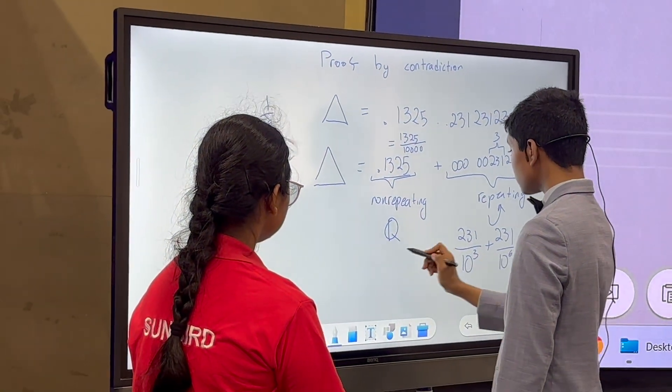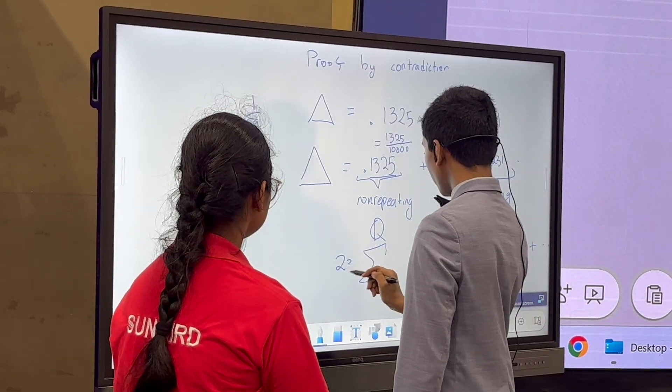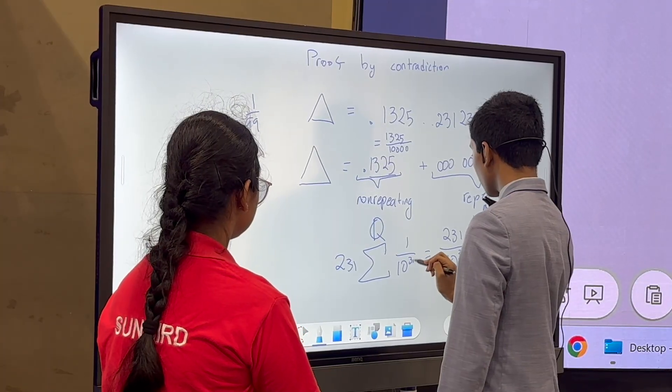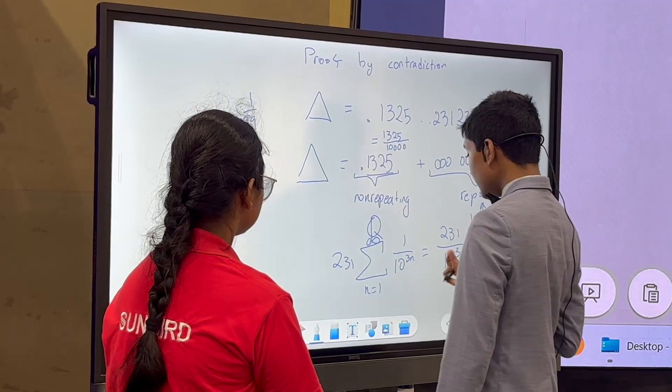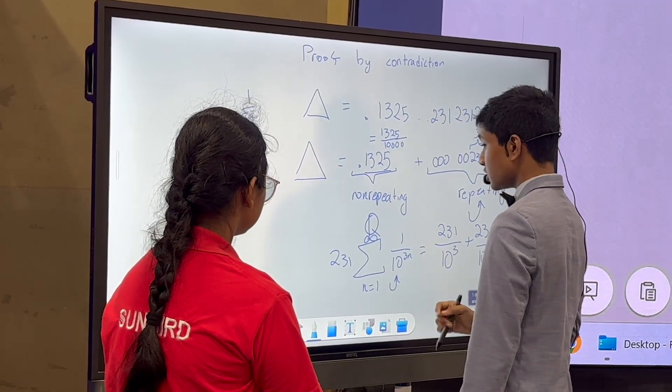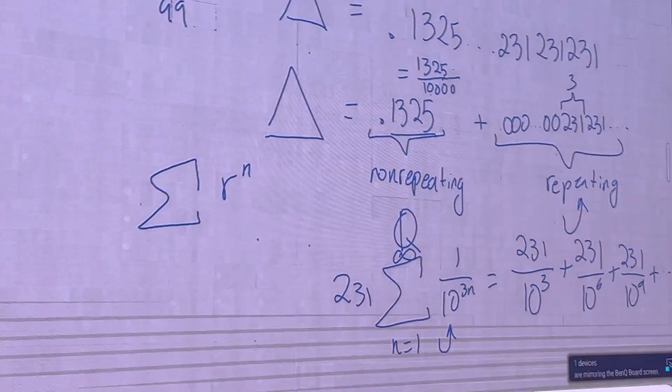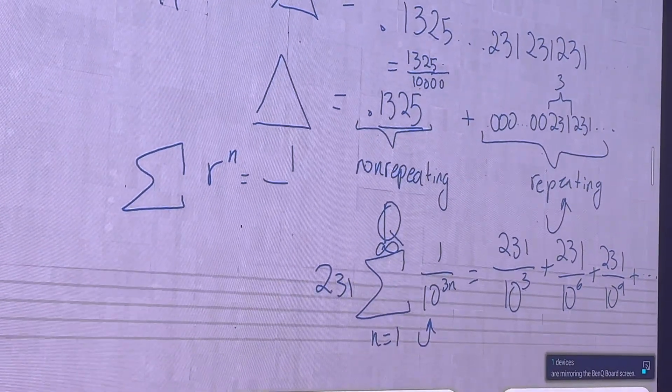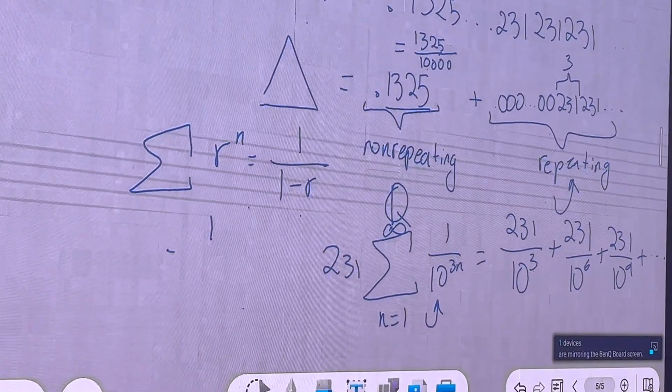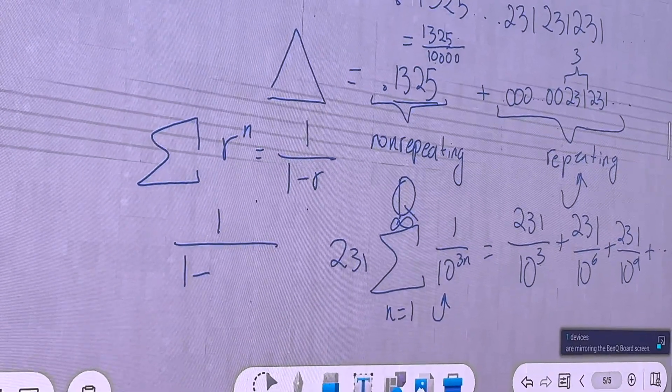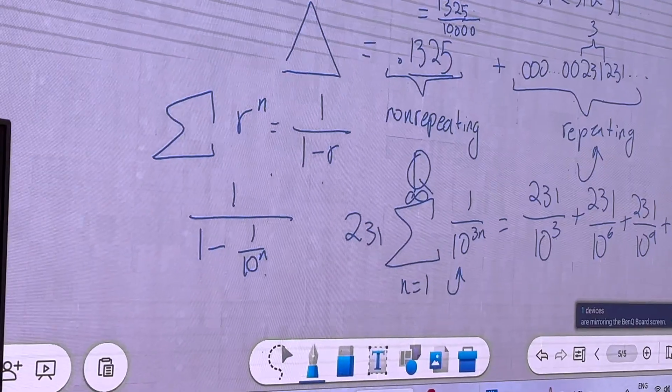And of course, that is going to be a geometric series. You can write it as 231 times Σ(1/10^(3n)) for n equals 1 to infinity. And now, well, what's the sum of a geometric series? The sum of Σr^n is always equal to 1/(1-r). And in this case, we're going to get 1/(1 - 1/10^n), and that power of 10 depends on how many digits are in the repeating part.